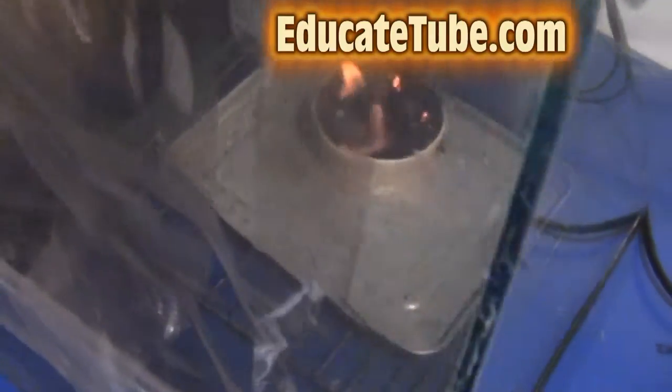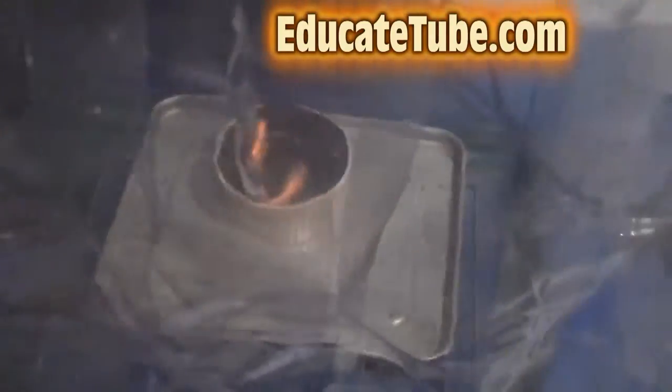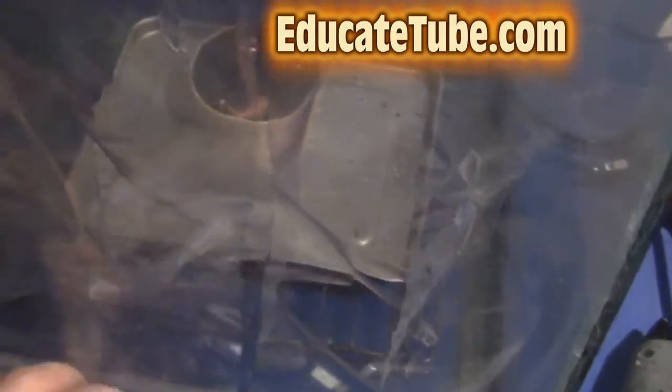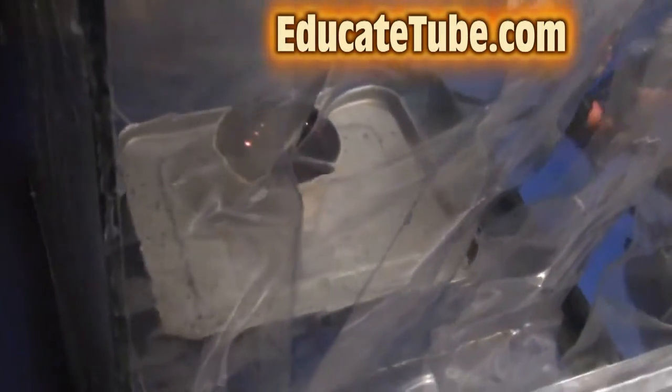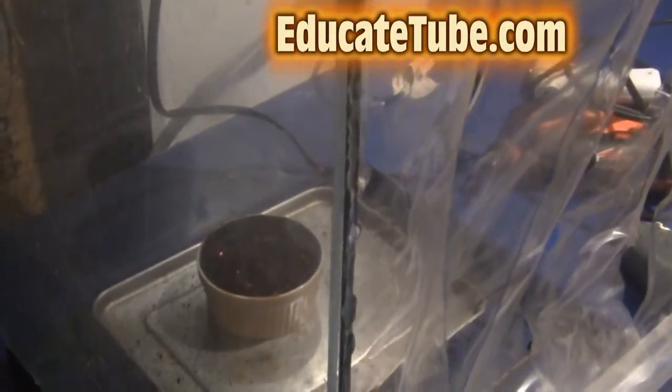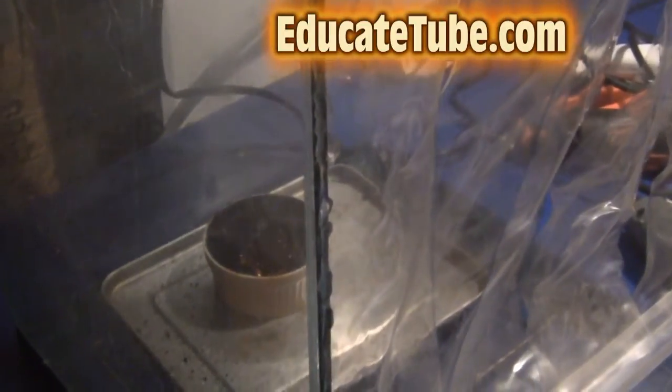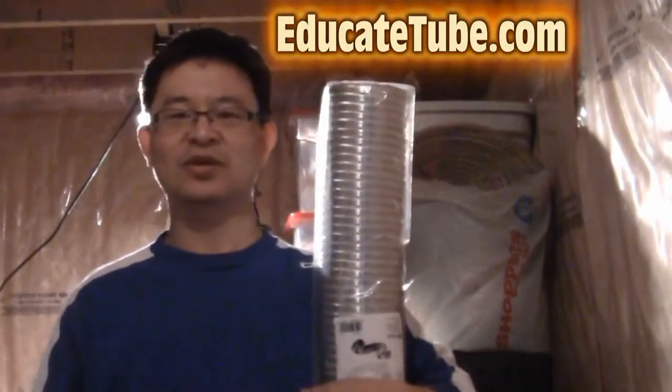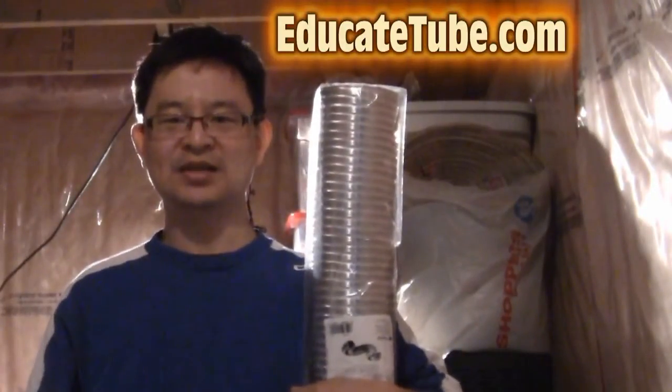For example, if you want to do a chemistry experiment or a science experiment in a controlled condition and safe environment, this is what you will need. So very easy. All you need is a fish tank and a ventilation duct system like this duct tube, and I'll show you other materials you need as well. Let's get started.